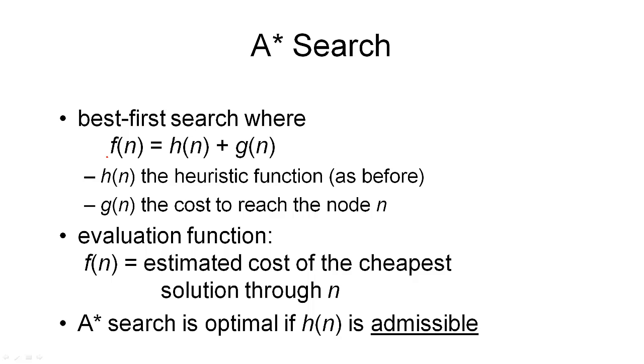Remember, f, the evaluation function, tells us in which order we explore nodes on the fringe. The heuristic h tells us the distance to the nearest goal node. So far, it is nothing new. What is new is this component g that we add to the heuristic to get our evaluation function. And this function g simply gives us the cost to reach the node n. So that's the cost we already had to get from our initial state to this node n. And to this, we add the heuristic, which is the estimate to the nearest goal node from this node n.